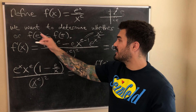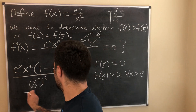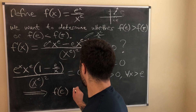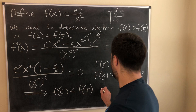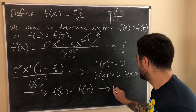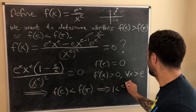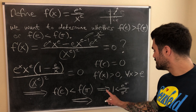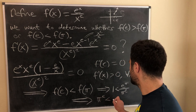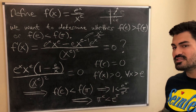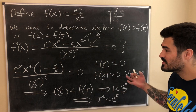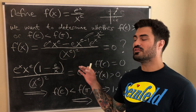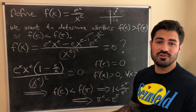Since f is increasing for x > e, and π > e, we conclude f(π) > f(e). That means f(e) < f(π), i.e., 1 < e^π / π^e. Multiplying both sides by π^e gives us π^e < e^π. So it turns out that π^e is less than e^π — proven without a calculator. The other two functions follow a similar process; this was just my favorite approach.